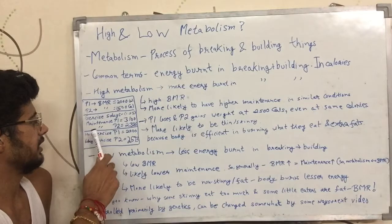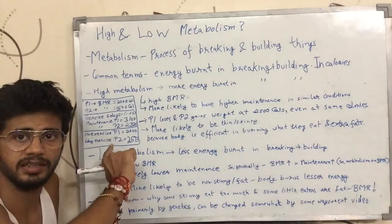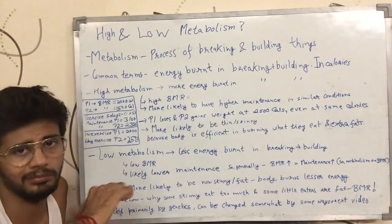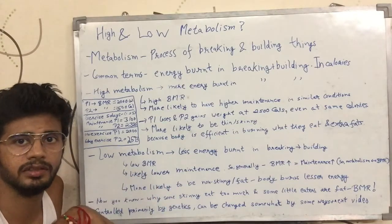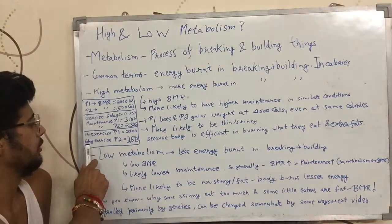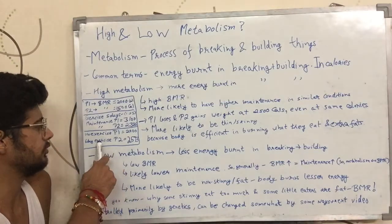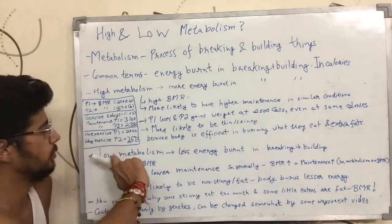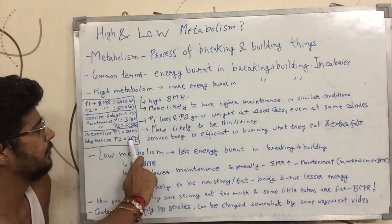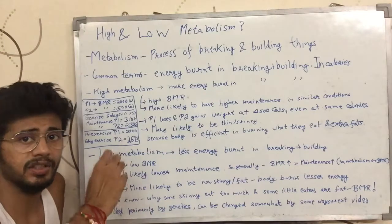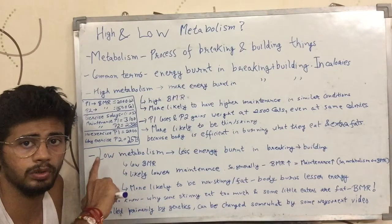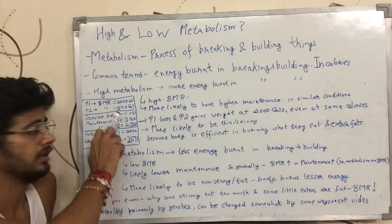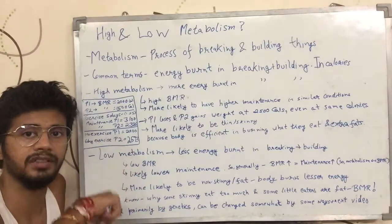Now let's take a case where P1 does no exercise — just sits on the couch, watches TV all day, and P2 goes to the gym and does decent-intensity exercise for 6 days a week. In this case, P1 gets a maintenance of 2400 — 2000 multiplied by 1.2 — and P2 gets a maintenance of 2325 — wait, 1500 multiplied by 1.75 equals 2625. So the person with more BMR can have lesser maintenance calories, and the person with lower BMR can have more maintenance calories, because they were not given the same conditions.